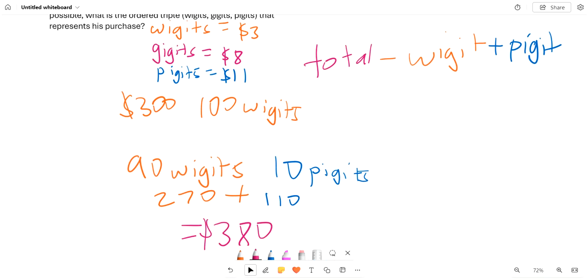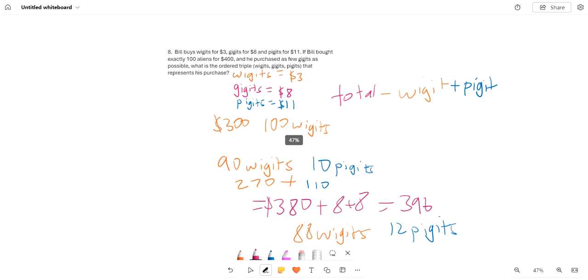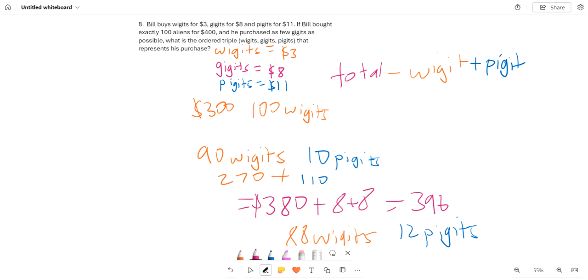We can see that $380, and we can keep increasing this by 8. So now we have 88 widgets and 12 Pidgets, but we can see that this results in 396. So we know that we can't make a purchase with entirely widgets and Pidgets. Therefore, we will have to have some Gidgets, but we have to have as less as possible.